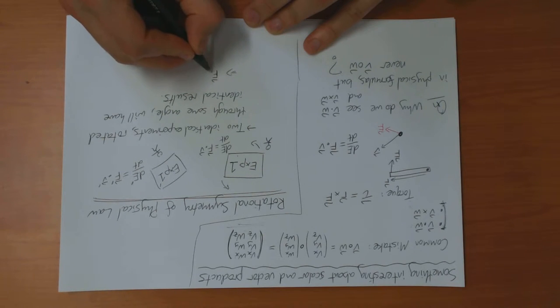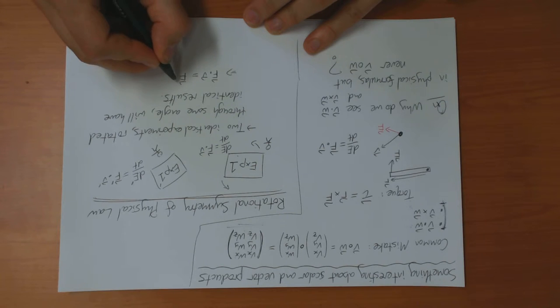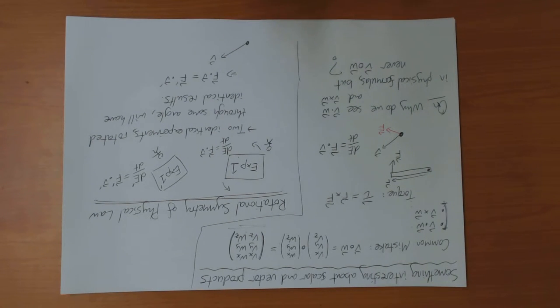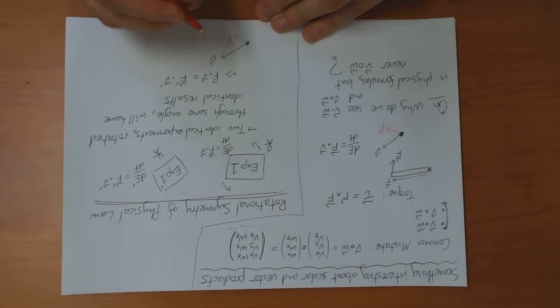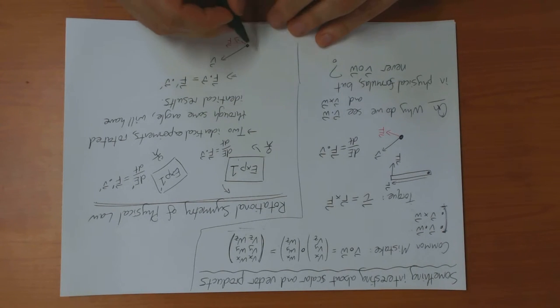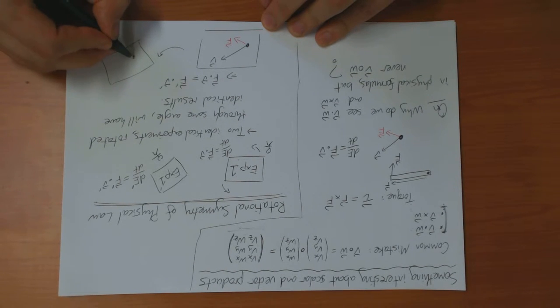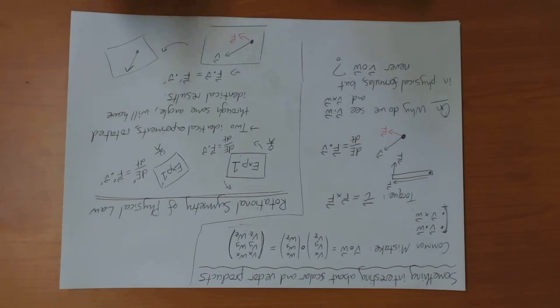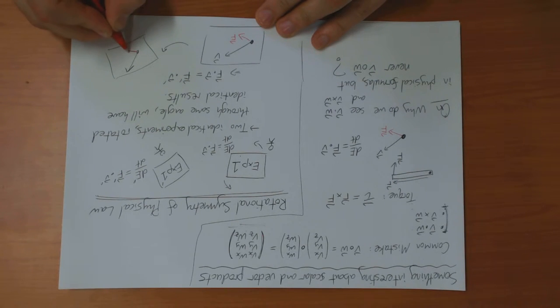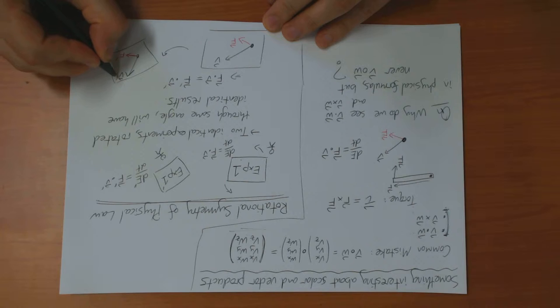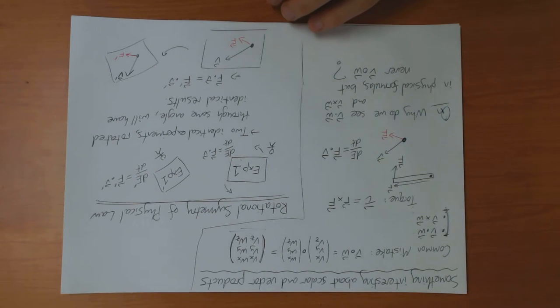So what this means is that F dot V should be equal to F prime dot V prime. So in other words, if I have the original vectors like this, V and F, and I rotate them to vectors like this, F prime and V prime, then the results will be the same.